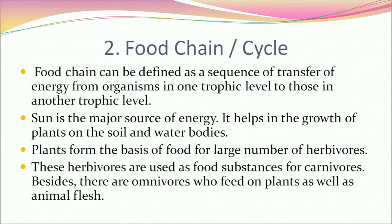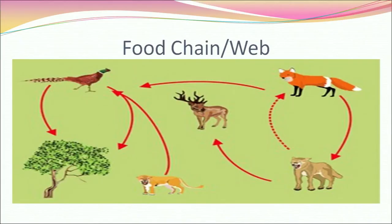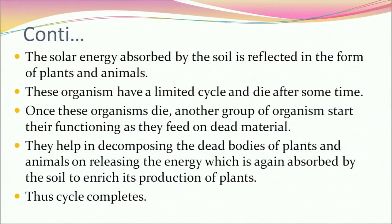The food chain is defined as a sequence of transfer of energy from organisms in one trophic level to those in another. The sun is the major source of energy, helping in the growth of plants on soil and water bodies. Plants form the basis of food for herbivores, which in turn are food for carnivores. There are also omnivores who feed on both plants and animal flesh. Once organisms die, decomposers feed on dead material, decomposing bodies and releasing energy which is again absorbed by the soil to enrich plant production. Thus the cycle is complete.